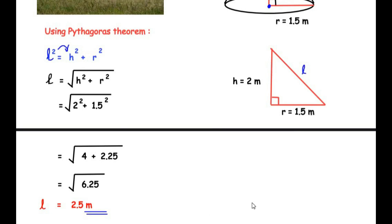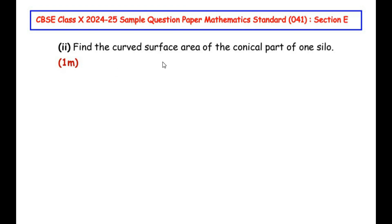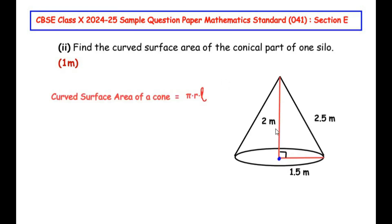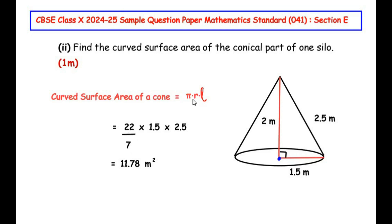Now let us move on to the second sub-question: find the curved surface area of the conical part of one silo. From part 1, the perpendicular height is 2 meters, radius is 1.5 meters, and slant height is 2.5 meters. The formula for curved surface area of a cone is π × r × l. Plugging in the values: (22/7) × 1.5 × 2.5, we get the curved surface area of the cone as 11.78 m².